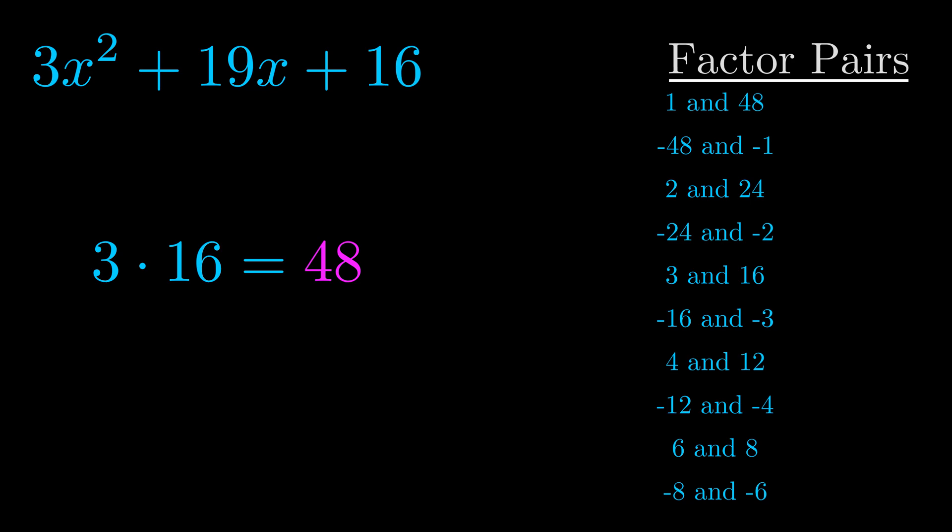The b value is the coefficient on the x term. That's the middle term, the one that we haven't done anything with yet. And really this is the only factor pair that we need.